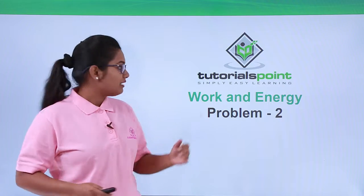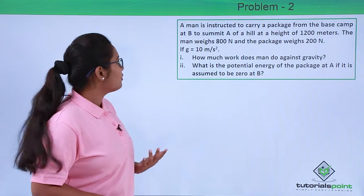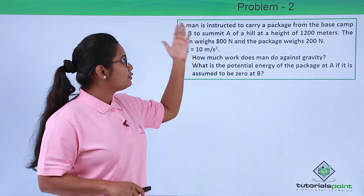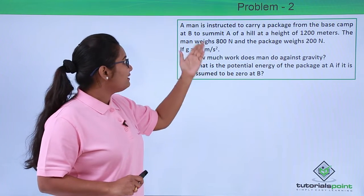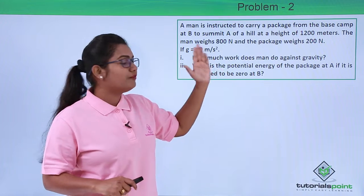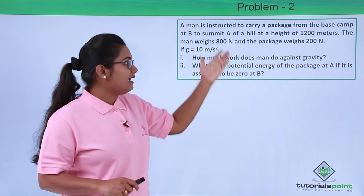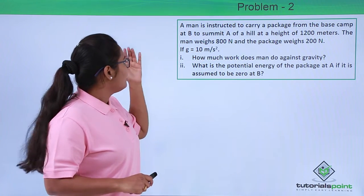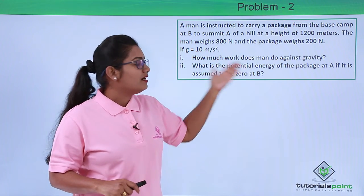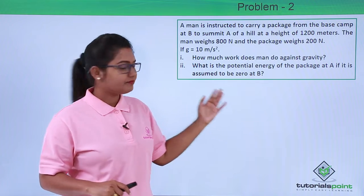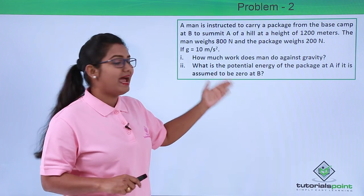Hello everyone. In this video we are going to solve another problem from this chapter, that is Work and Energy. The problem reads: a man is instructed to carry a package from the base camp at B to the summit A of a hill at a height of 1200 meters. The man weighs 800 Newton and the package weighs 200 Newton. If g equals 10 meters per second squared, how much work does the man do against gravity, and what is the potential energy of the package at A if it is assumed to be zero at B?